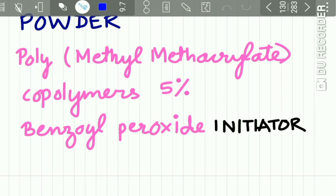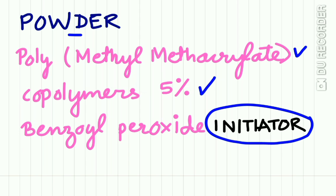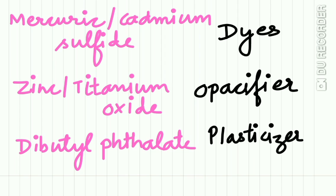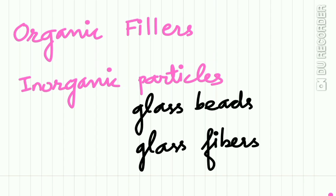The polymer or powder contains polymethyl methacrylate co-polymer 5%, and the initiator present is benzoyl peroxide. Mercuric and cadmium sulfides are present as dyes; zinc and titanium oxide act as opacifiers; and dibutyl phthalate is the plasticizer. The polymer also contains organic fillers and inorganic particles such as glass beads and glass fibers.